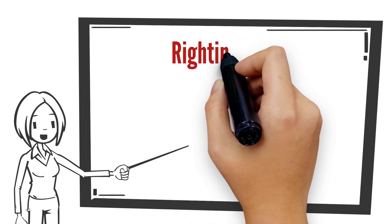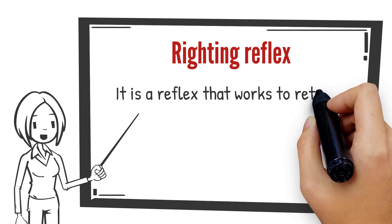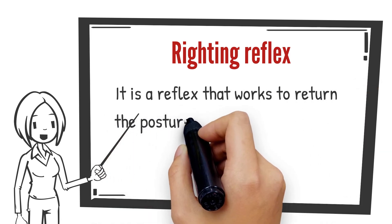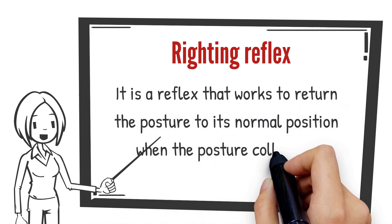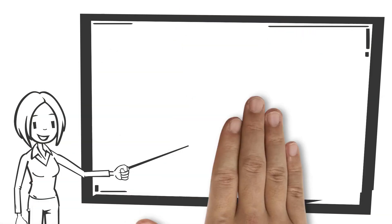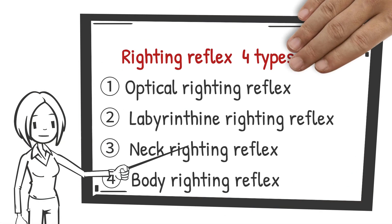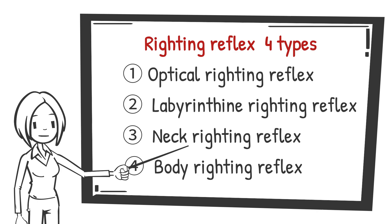The third reflex, the righting reflex, is a reflex that attempts to return the posture to its normal position when the posture is collapsed. It plays an important role in the stability of turning over and sitting up. The righting reflex can be divided into the optical righting reflex, labyrinthine righting reflex, neck righting reflex, and body righting reflex.